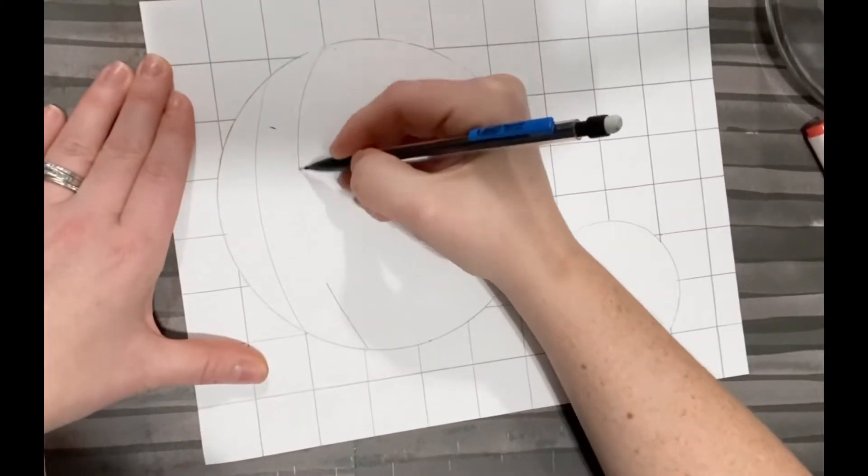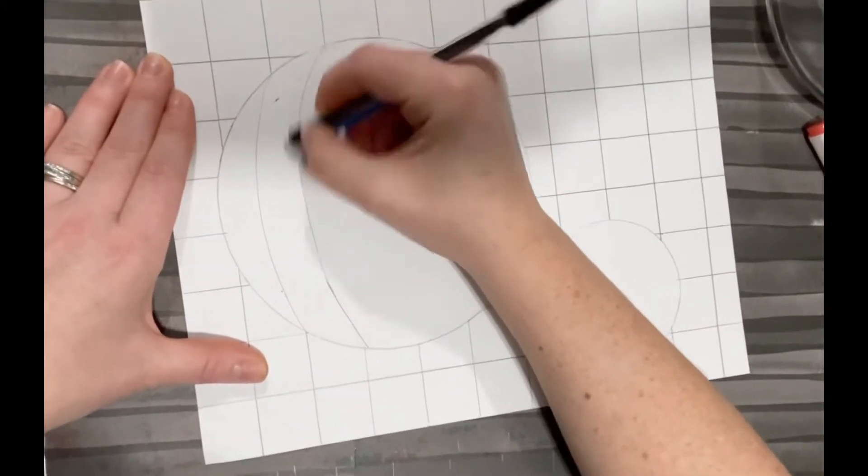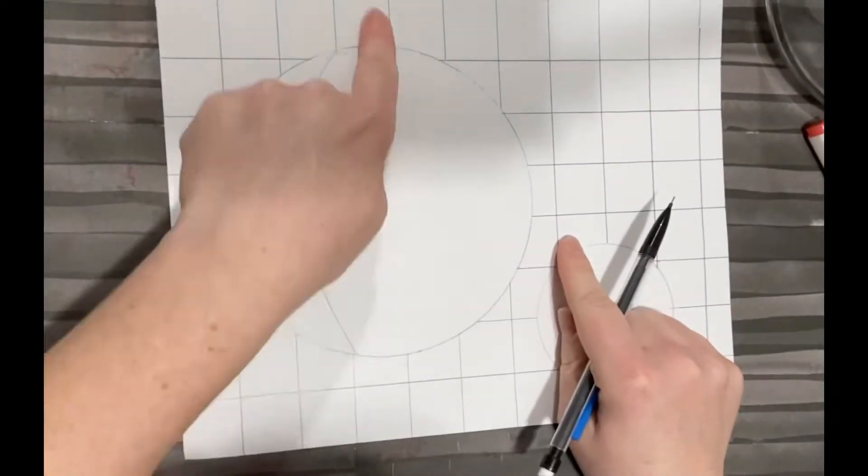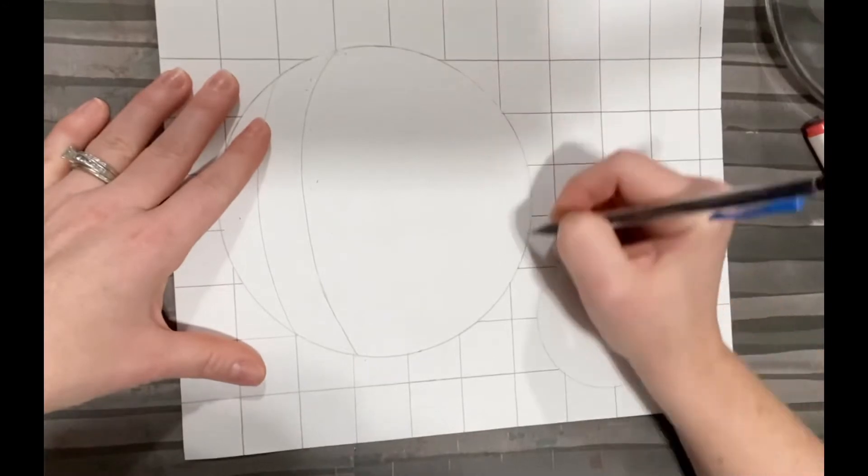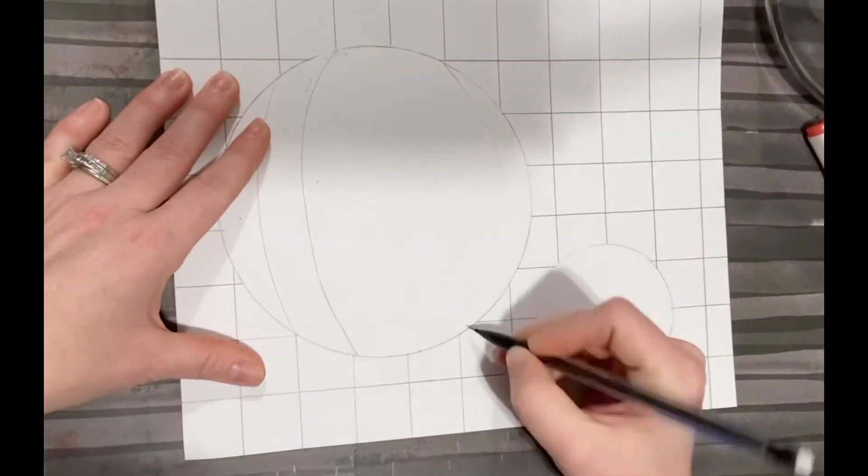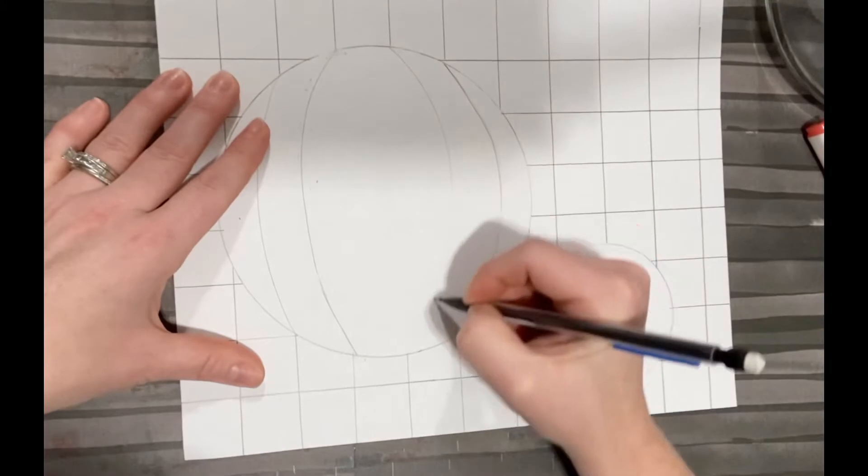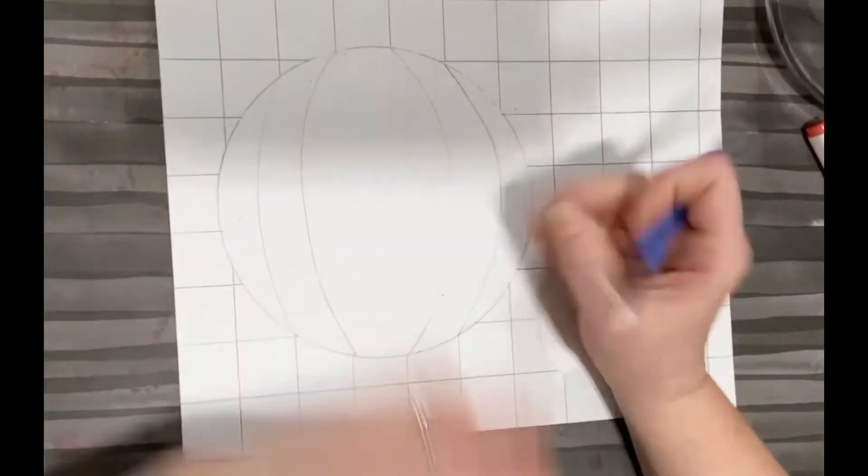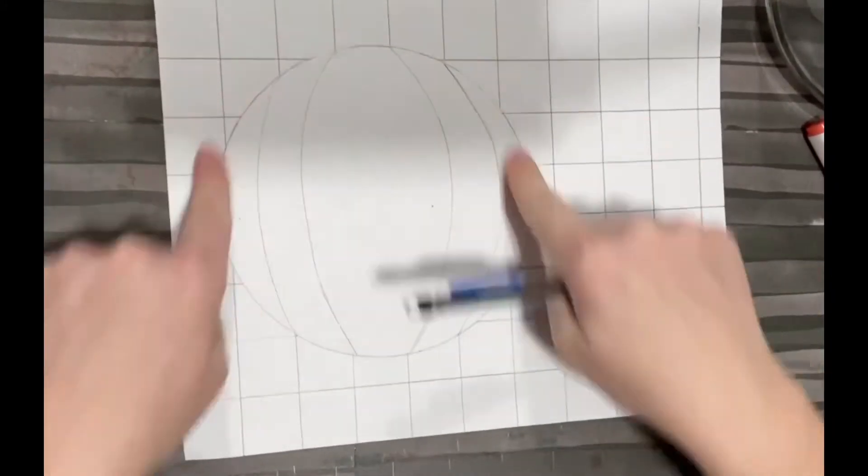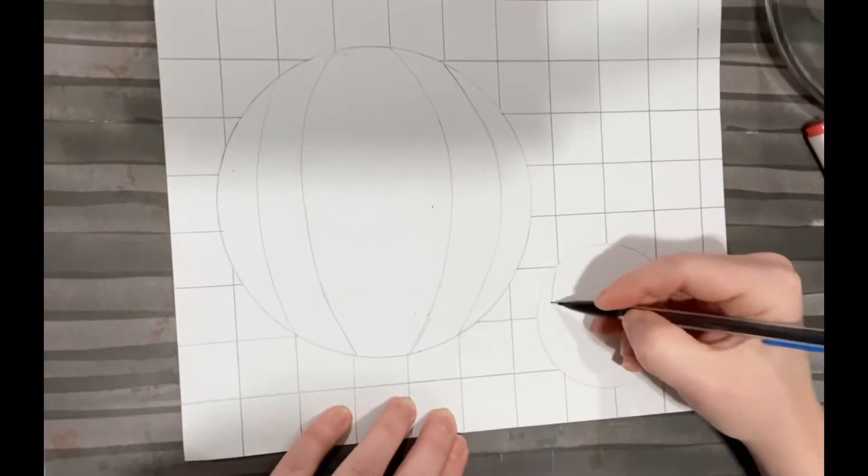As we get to the second half of the circle, start to curve your lines to the right. I didn't have a center point in my circle because of where I placed it on my grid, but if you do you can make the line in the very center straight.